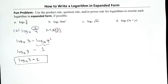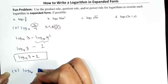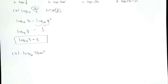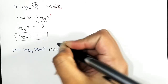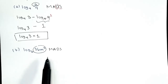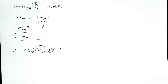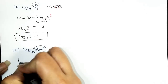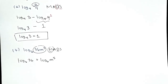Problem B: we have logarithm base 6 of 36 times m to the fifth. I'll look at the argument — is it a multiplication or division problem? It's a multiplication problem, so we expand it as an addition: log of the first factor plus log of the second factor. That gives us logarithm base 6 of 36 plus logarithm base 6 of m to the fifth.